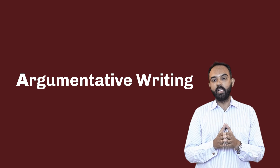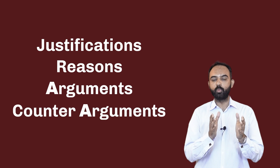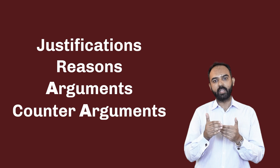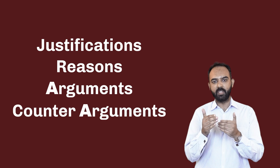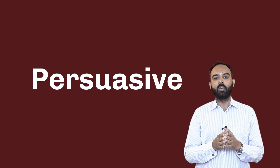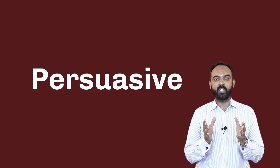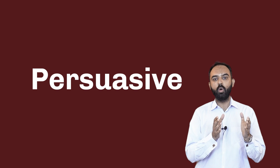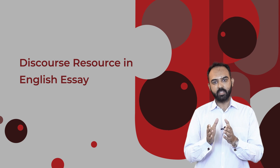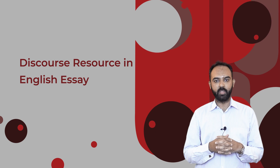Argumentative writing includes justifications and reasons, and there can be arguments and counter-arguments to prove one's point. But once we move towards a way forward or call to action after providing justifications and reasons, then we call it a persuasive piece of prose. In majority of CSS essays, a way forward is a requirement. So most of our essays finally boil down to being persuasive pieces of prose, using all forms of discourse resource — exposition, description, argumentation, and narration — so that we may write persuasive essays. I will be soon back with another interesting video. Bye-bye.